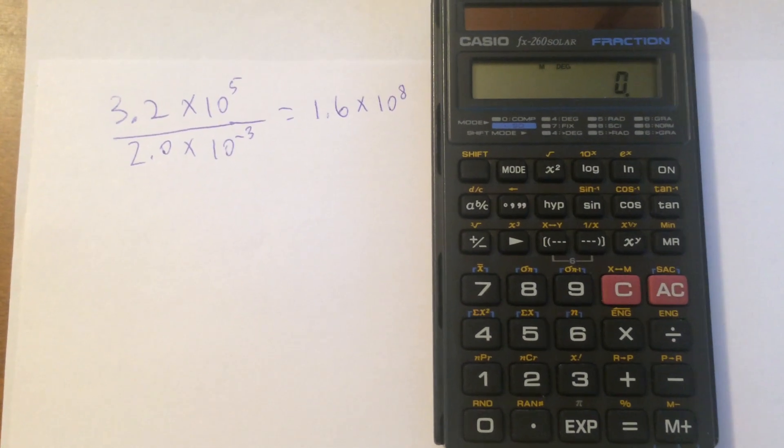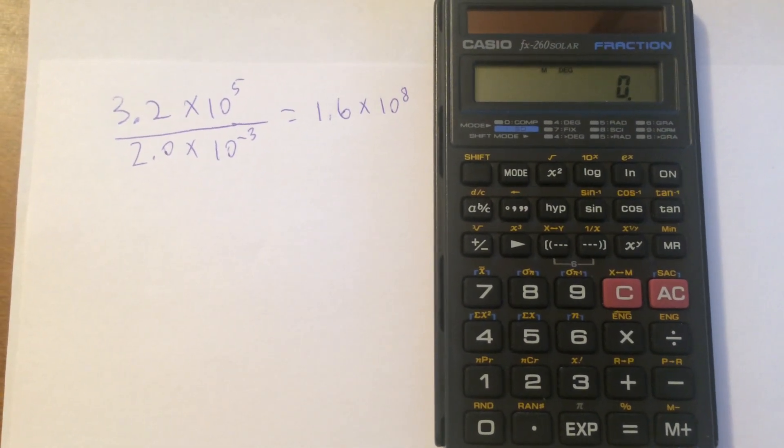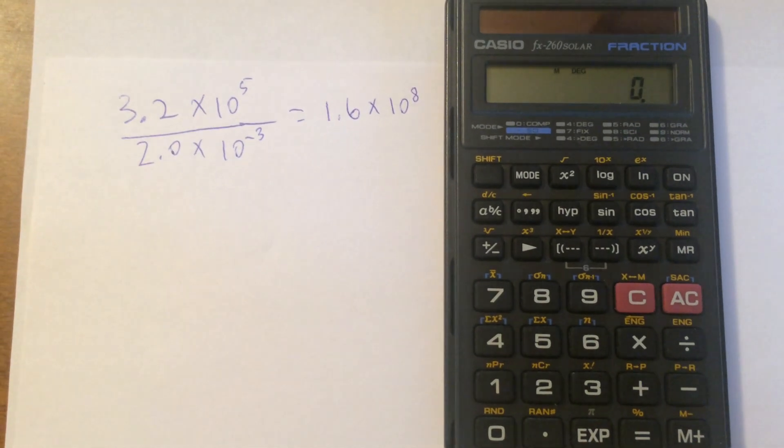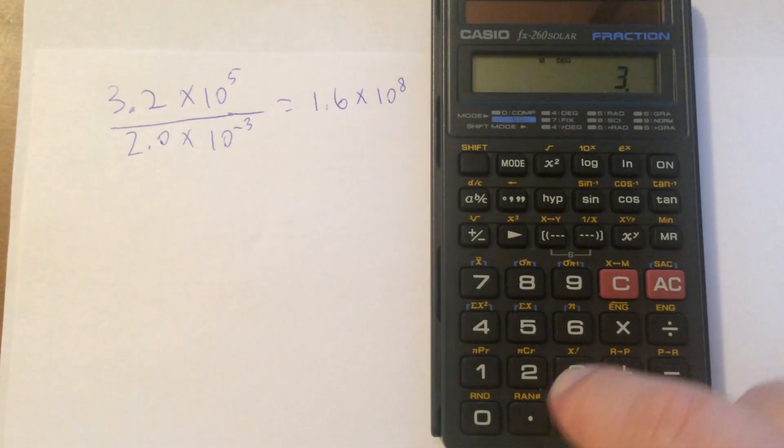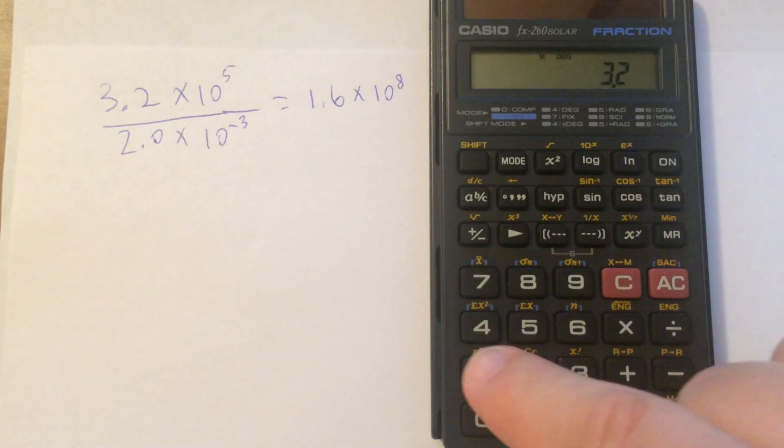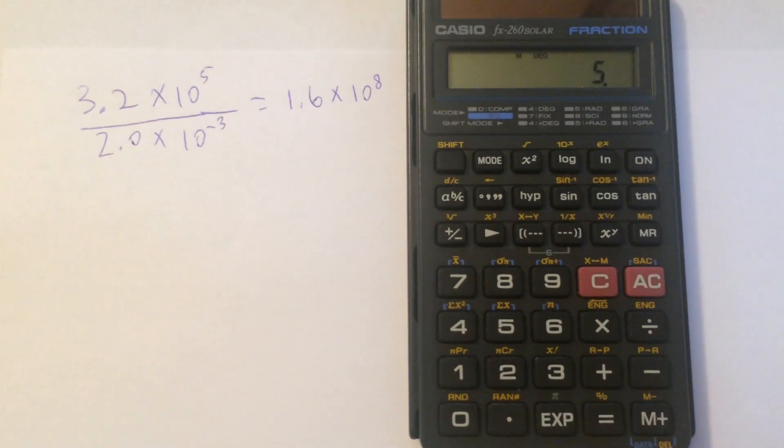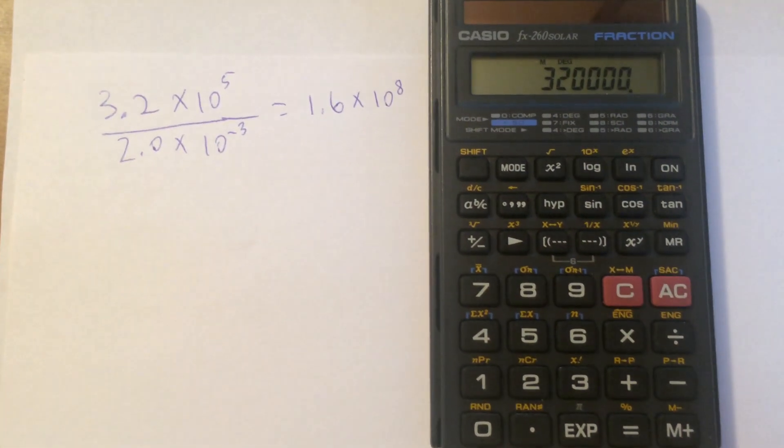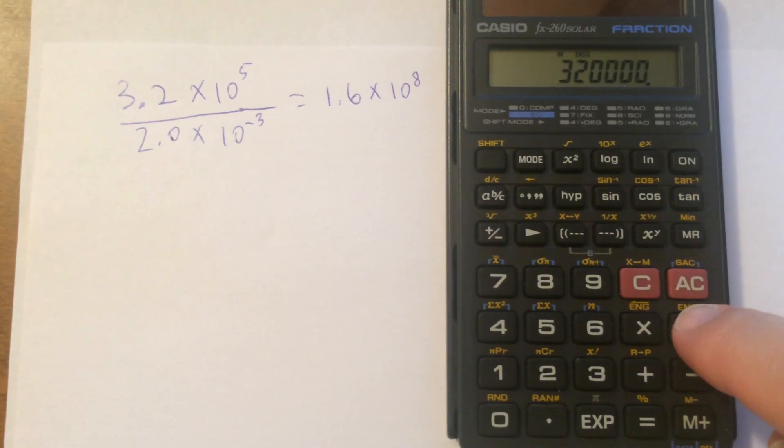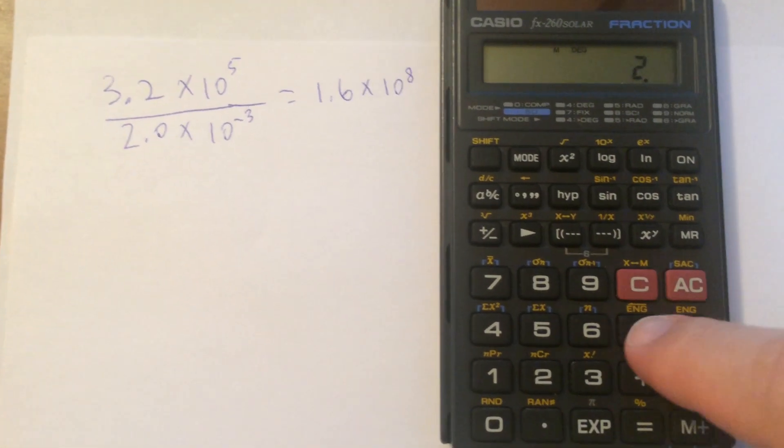Let's imagine that you went at this naively, just trying to enter it the way that it's written without taking advantage of the features of the calculator. We write 3.2 times 10 to the fifth, and we're good there. But then we enter divide by 2 times,